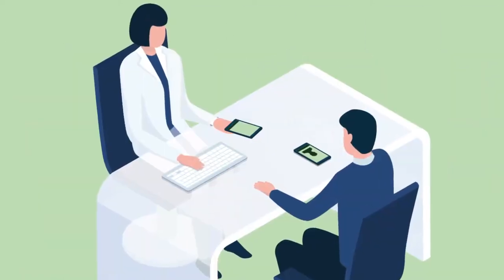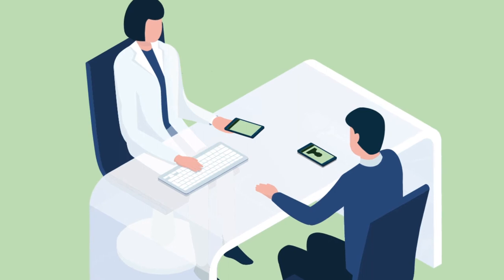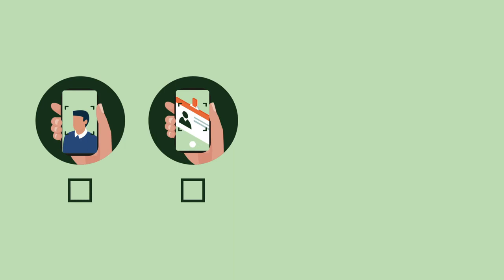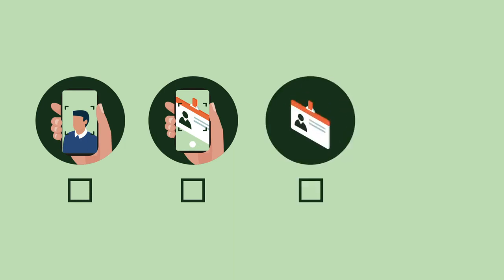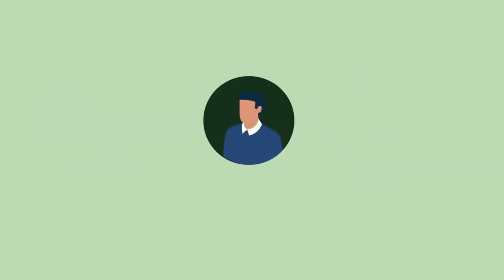Your next step is to get it tested or verified by an agent who is authorized to do so. The agent will view the images on your phone within the app, the physical copy of your ID, and you in person, and attest that both the selfie and the ID match the person they see in front of them. The agent does not record your name or anything else about you — just the fact that you and your ID are one and the same.